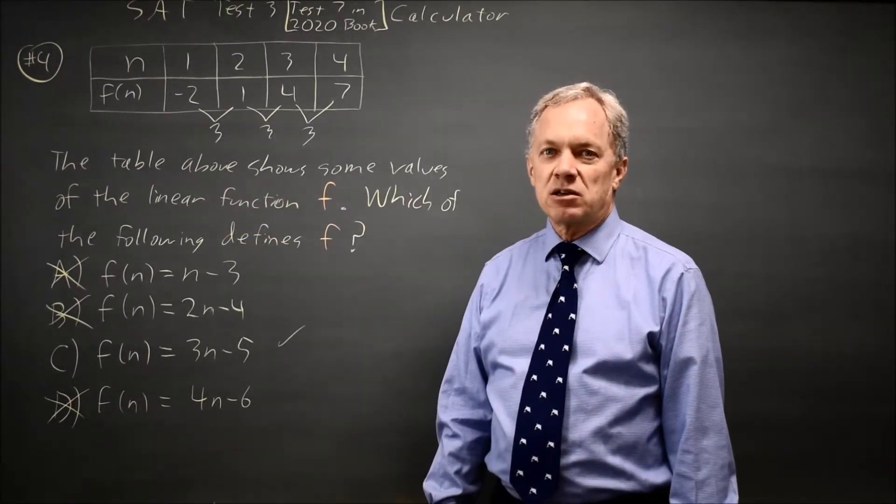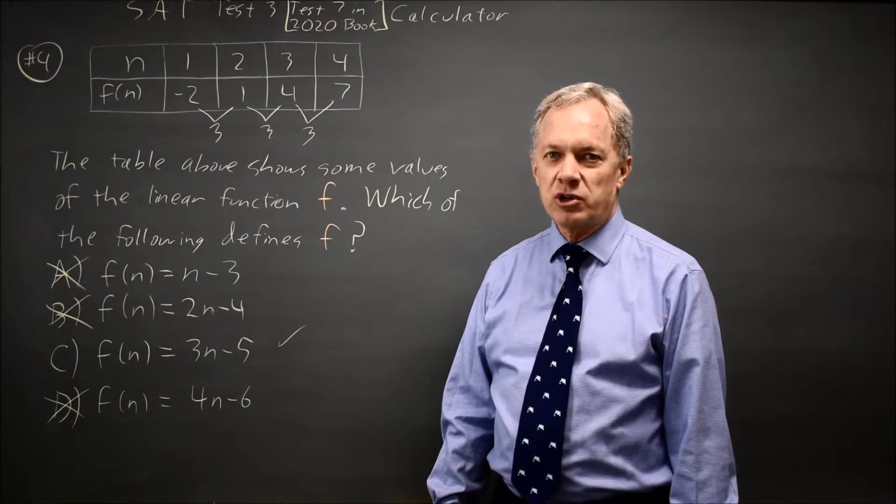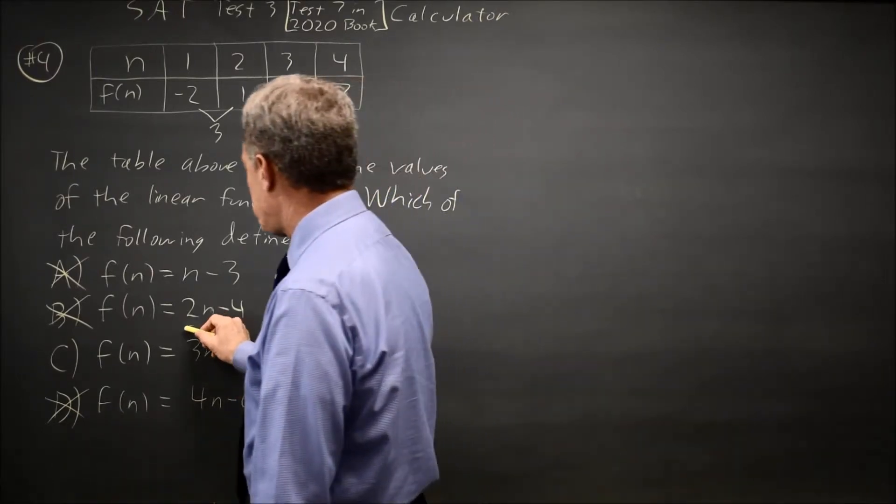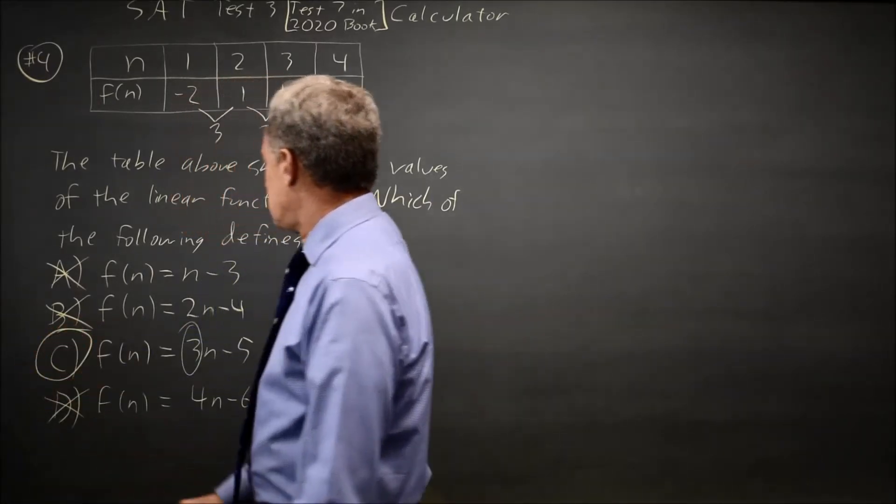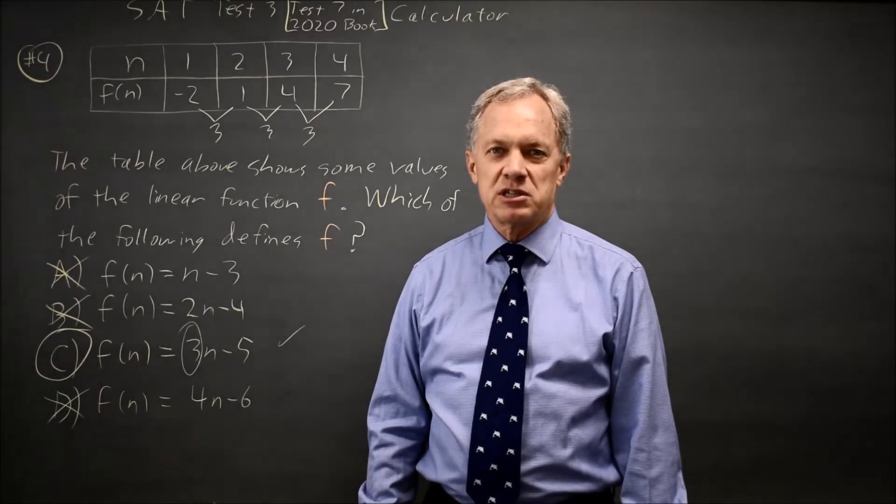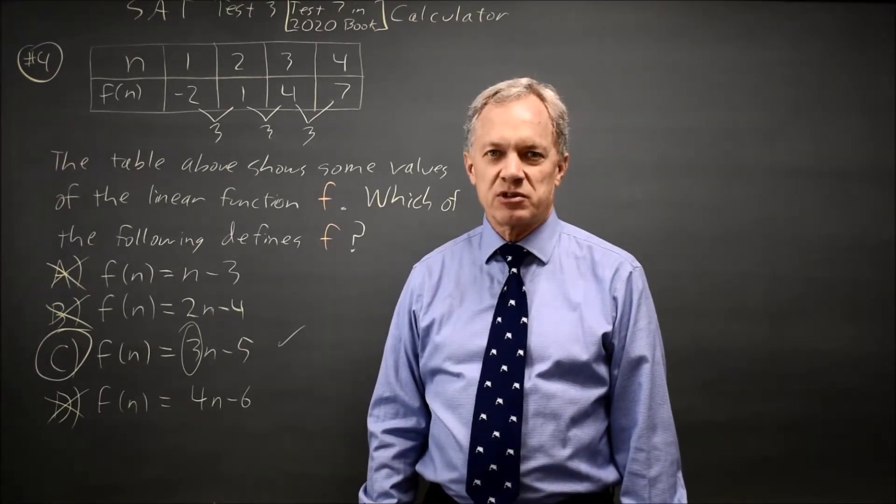But our first difference is also 3, which is the slope of the linear function, and the only choice with a slope of 3 is choice C. The others have slopes 1, 2, and 4, so we know that they're wrong, because our first difference is the slope and our first difference is 3.